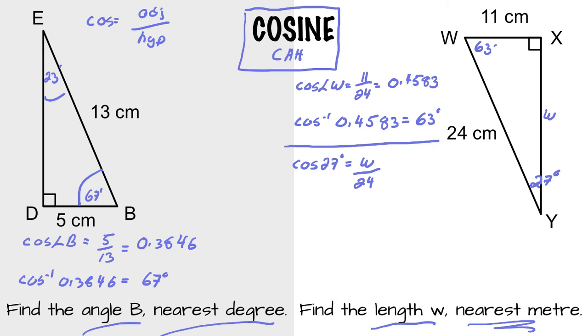Cross multiply. And you will get the length of W. Again, figure out what your calculator does. It's either 24 cosine 27 or cosine 27 times 24. In either case, you will get W equaling 21.